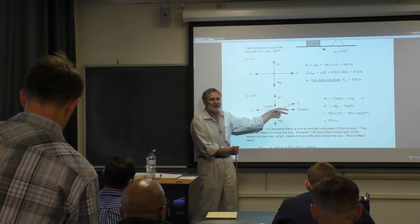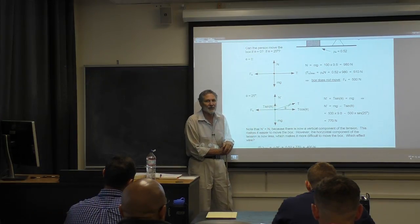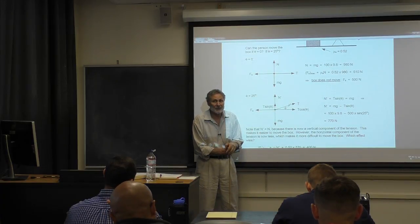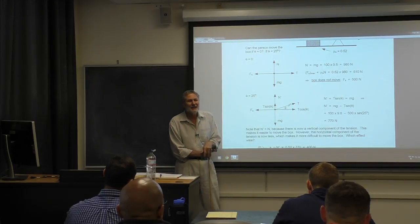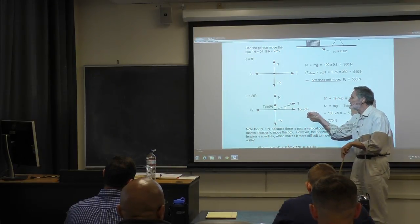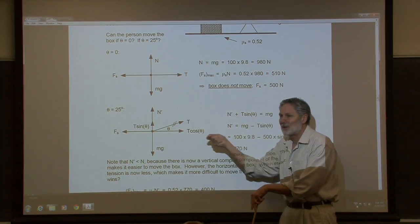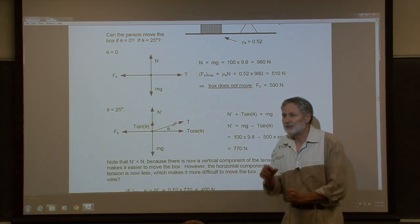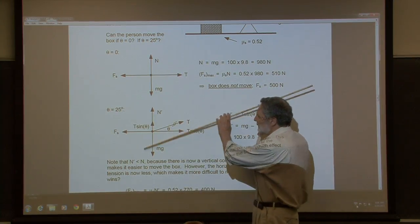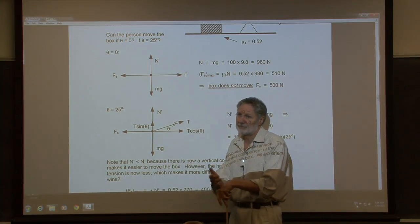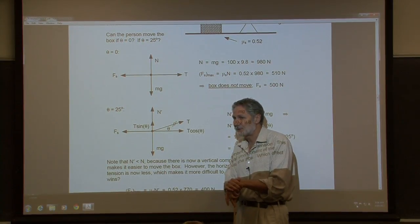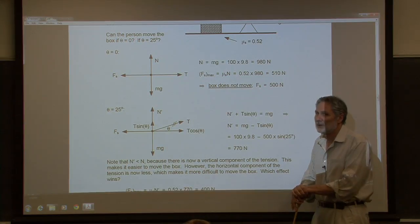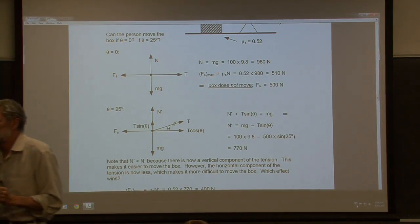But what about the tendency to actually move the box horizontally? If we pull at an angle instead of horizontally, the horizontal component of the force is less. So we have two competing effects: going to an angle lowers the normal force, which reduces the maximum static friction and makes it easier to move the box; but it also reduces the horizontal pulling force, making it harder. Which one wins? We have to calculate.